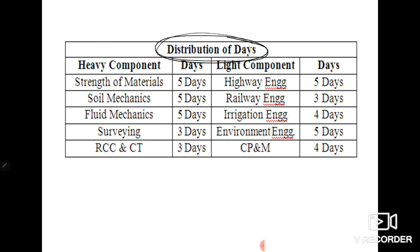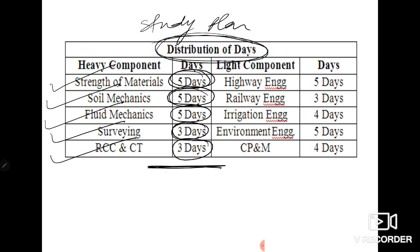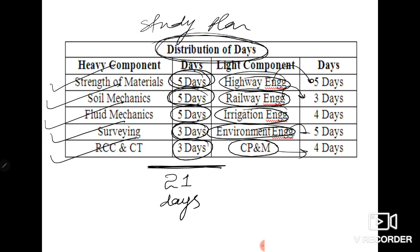RCC is one of the major subjects. Along with these heavy subjects, we have kept light components in parallel - Highway Engineering, Railway Engineering, Irrigation Engineering, Environment Engineering, and Construction Planning and Management. This is the combination of heavy subjects and light subjects. Now for distribution of days: Strength of Materials 5 days, Soil Mechanics 5 days, Fluid Mechanics 5 days, Surveying 3 days, RCC and CT 3 days. In parallel with these heavy components, we have Highway 5 days, Railway Engineering 3 days, Irrigation Engineering 4 days, Environment Engineering 5 days, and Construction Planning and Management 4 days. Both these make 21 days, and these are not separate 21 days but the same 21 days in which we have to take up both heavy and light components.